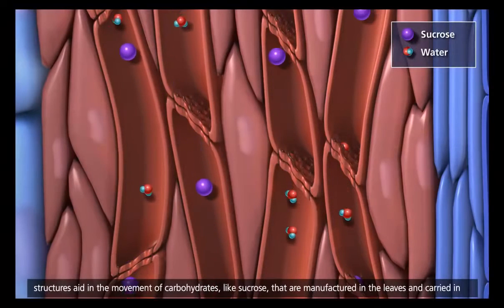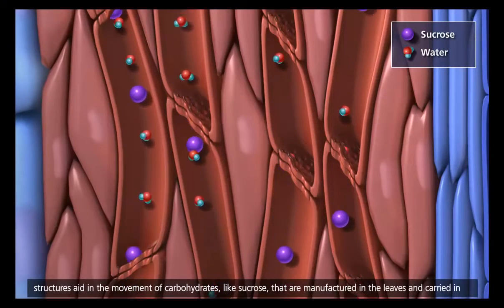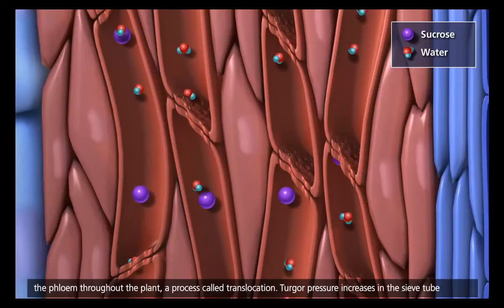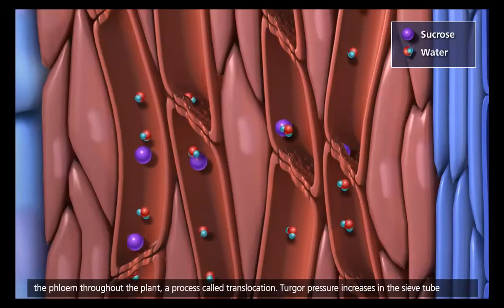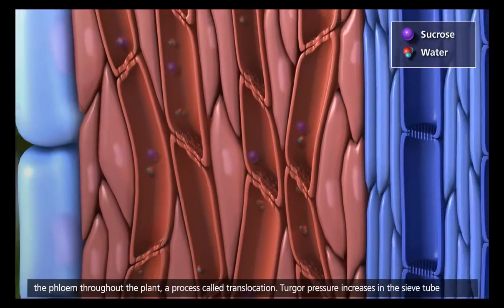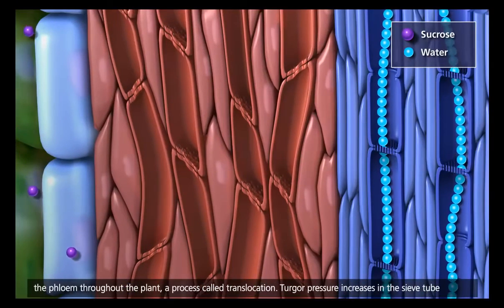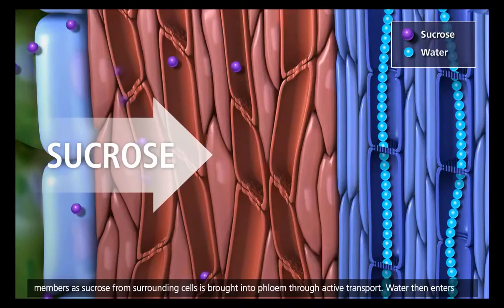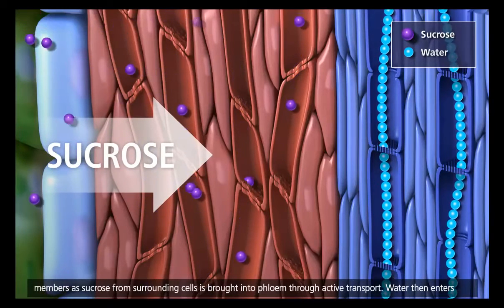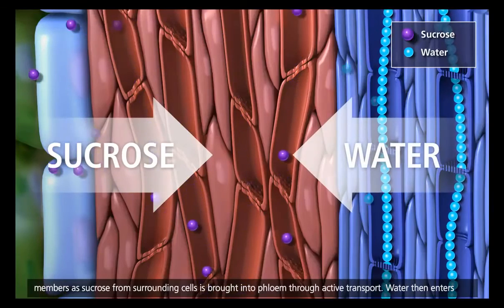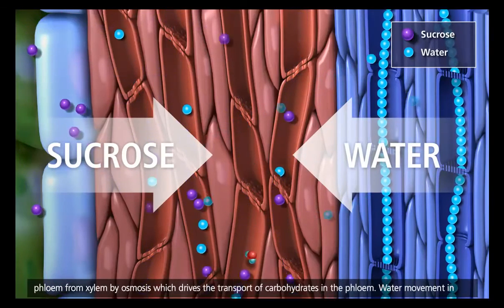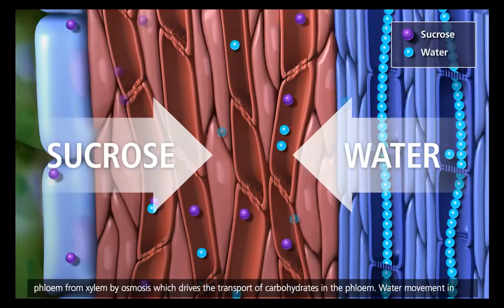These structures aid in the movement of carbohydrates, like sucrose, that are manufactured in the leaves and carried in the phloem throughout the plant, a process called translocation. Turgor pressure increases in the sieve tube members as sucrose from surrounding cells is brought into phloem through active transport. Water then enters phloem from xylem by osmosis, which drives the transport of carbohydrates in the phloem.